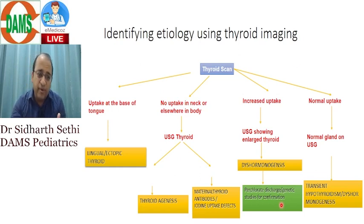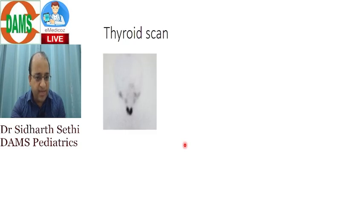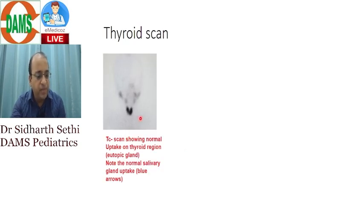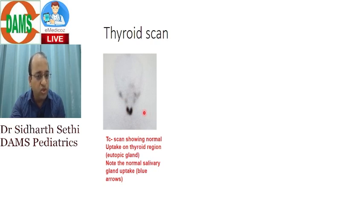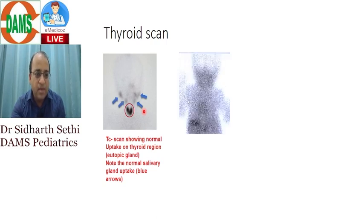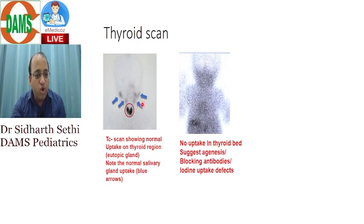We do a thyroid scan first, then an ultrasound thyroid. On screen is a normal technetium thyroid scan showing uptake of the thyroid gland — a eutopic thyroid — with normal salivary gland uptake shown by the blue arrows. If there is no uptake in the thyroid bed, it suggests agenesis, blocking antibodies, or iodine uptake defects.